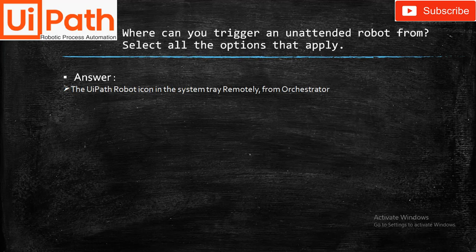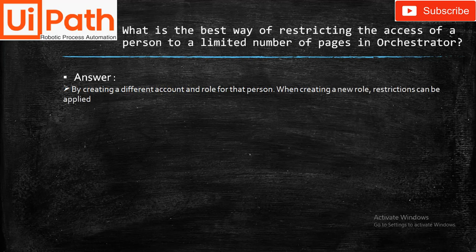Where can you trigger an unattended robot from? Select all that apply. Answer: The UiPath Robot icon in the system tray, and remotely from Orchestrator.